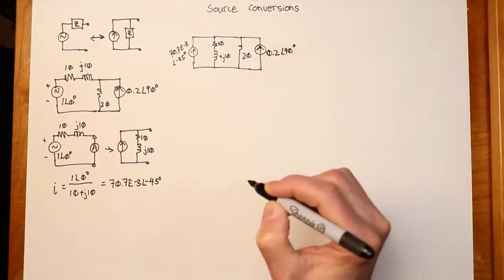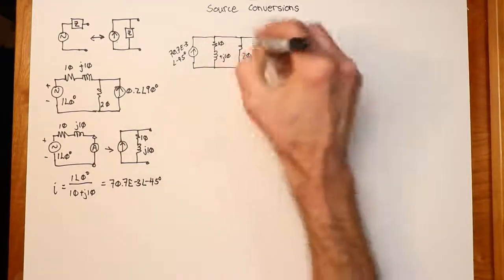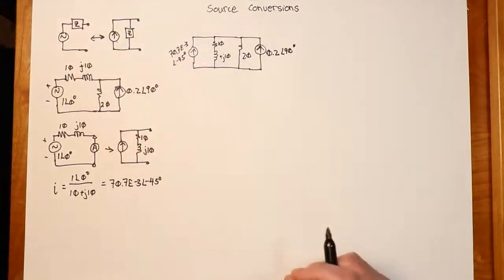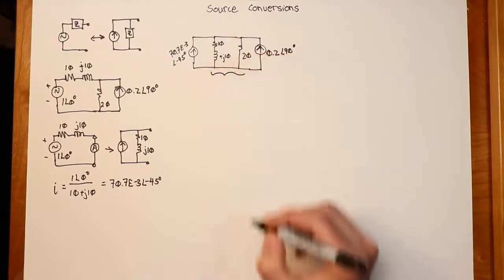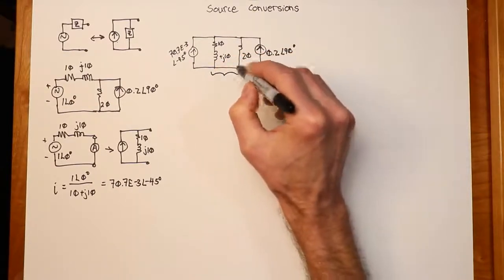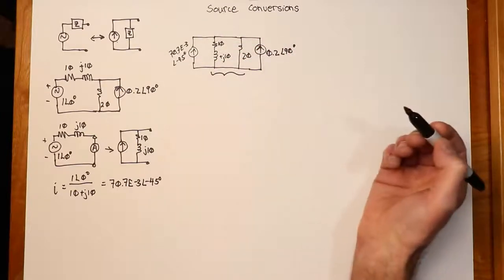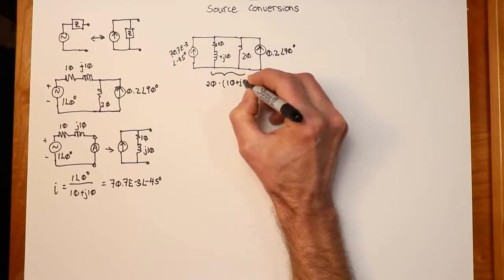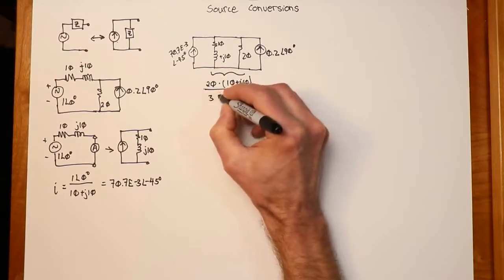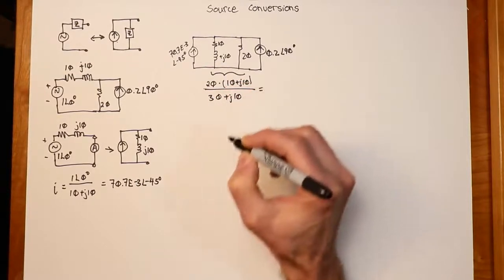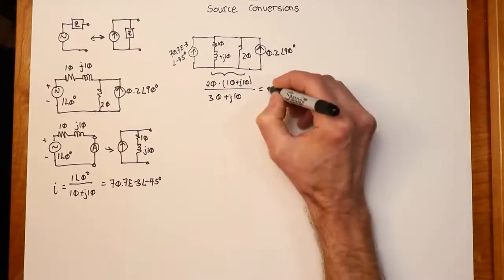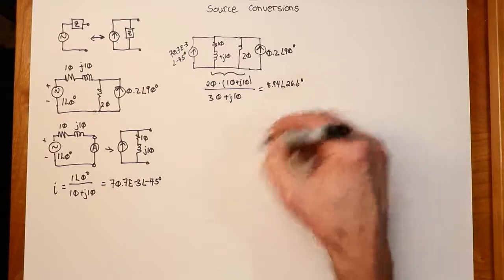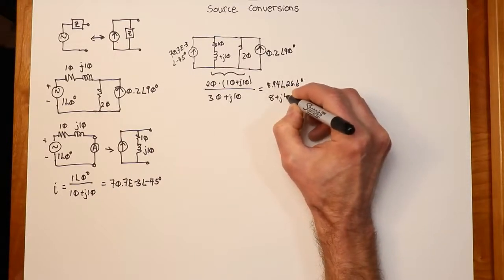That's all parallel. So what we'll do is combine the two current sources, figure out what this impedance is, then we'll have one current source and one impedance and we can configure the voltage. The parallel impedance is 20 times (10 plus j10) divided by (30 plus j10) — product over sum — which works out to 8.94 at an angle of 26.6 degrees, or in rectangular form, 8 plus j4.